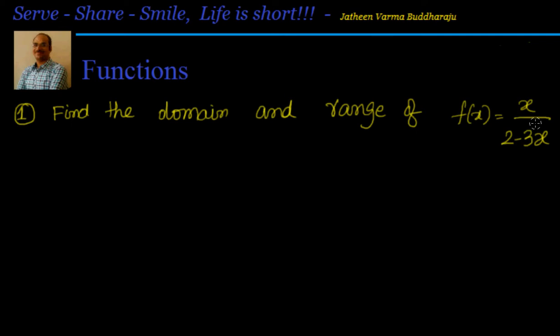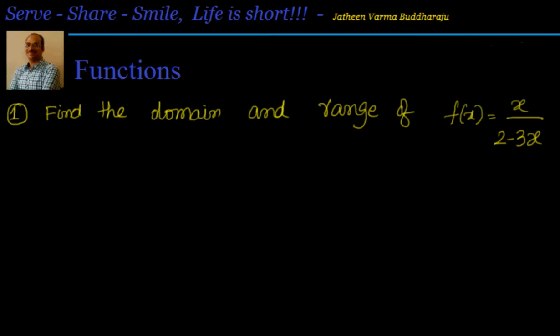Welcome back. We are solving some examples as part of functions. We have a simple example: find the domain and range of f(x) = x / (2 - 3x). We know that if 2 - 3x equals 0, then we will have some value divided by 0, which is not defined. So first we are trying to find out the domain.